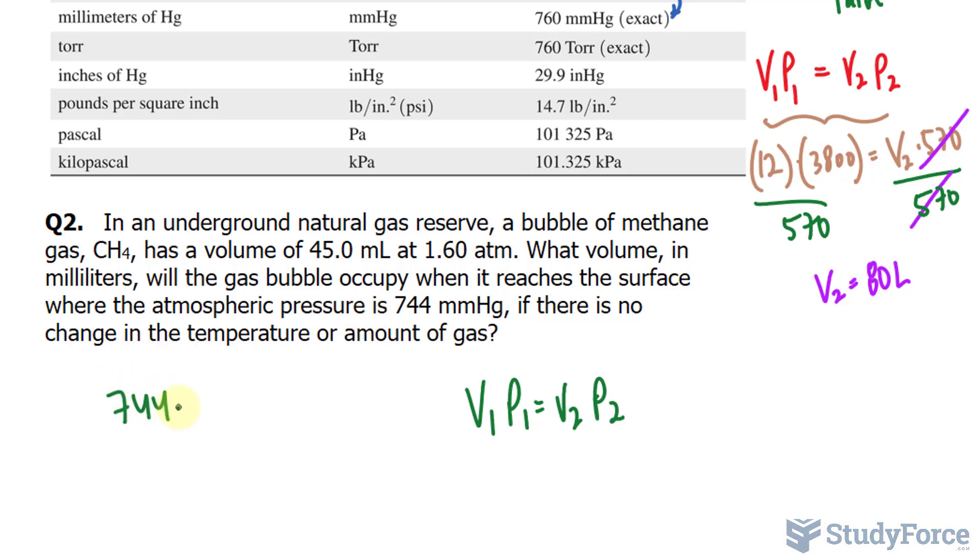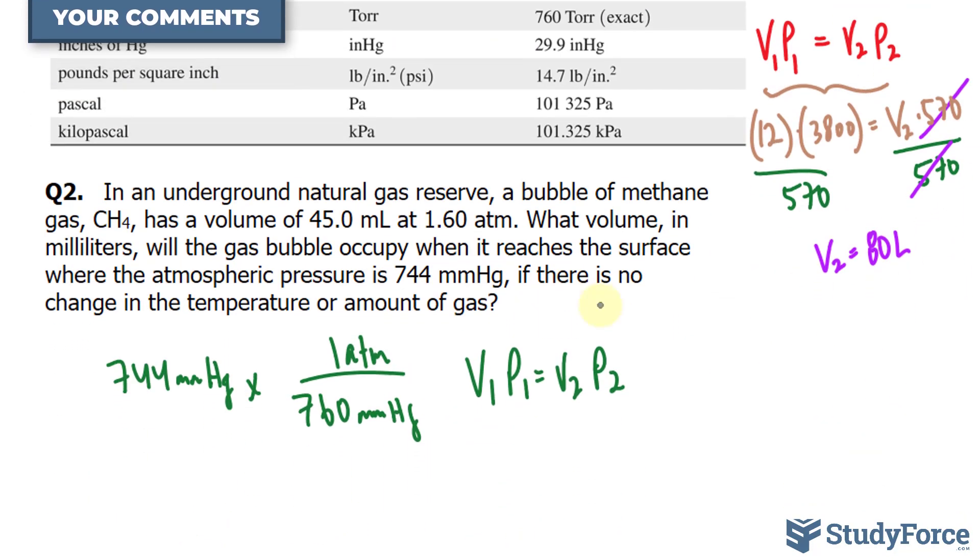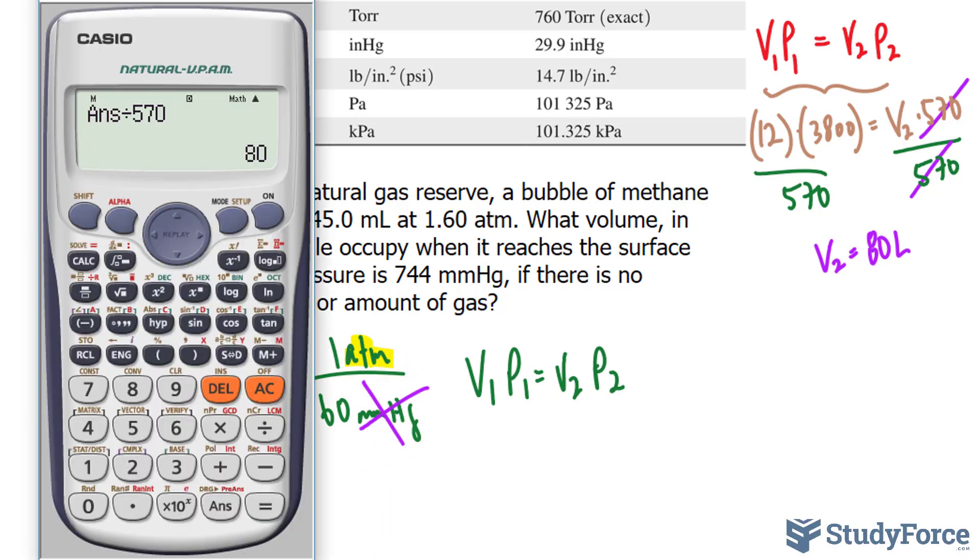So 744 mmHg, using the same conversion ratio as before. I'll write down 760 at the bottom. Notice that this unit is at the bottom, and 1 atmosphere at the top. The reason why I placed it like this, as opposed to the way it was here, is because this time I'm looking for atmosphere, and I want the unit that I want to keep at the top, so that these cancel out. Let's take 744 divided by 760, we end up with this number.